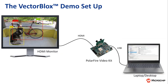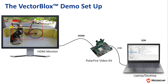In this product demonstration we have a PolarFire video kit, a Linux PC, and an HDMI monitor. The SDK can be installed on Linux or on Windows using a virtual machine. The camera in the video kit is used for video capture while the inference stream is output from the HDMI to a monitor.